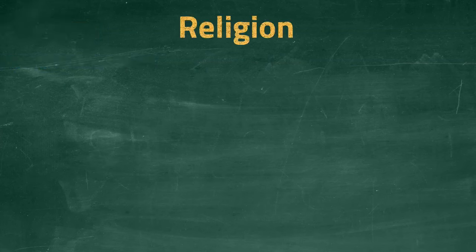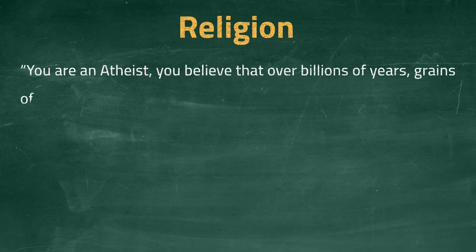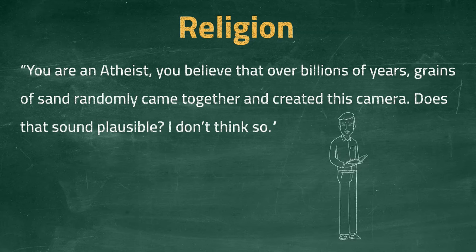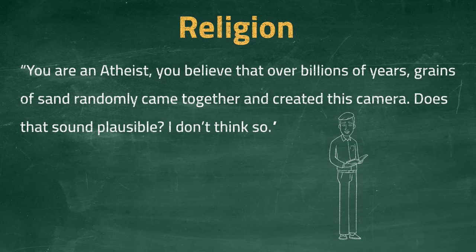The first example concerns religion. Imagine a religious preacher debating with an atheist, and he says: 'You are an atheist. You believe that over billions of years, grains of sand randomly came together and created this camera. Does that sound plausible? I don't think so.' An atheist is simply someone who does not believe in the existence of a god — that's it. This lack of belief says nothing about the origins of the universe or the phone or computer you're watching this on, except that it wasn't created by a god. The preacher misrepresents the atheist by suggesting that their lack of belief in God means they believe sand randomly came together to create a camera, without explaining why one entails the other. When stated this way, the belief sounds ridiculous, and allows the preacher to give the impression that they have debunked the atheist.